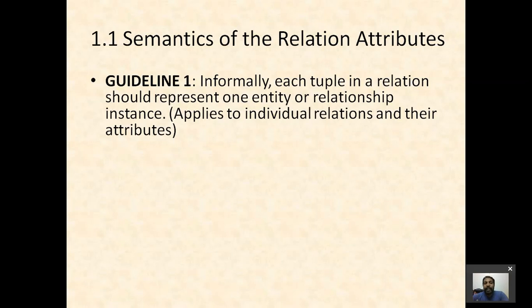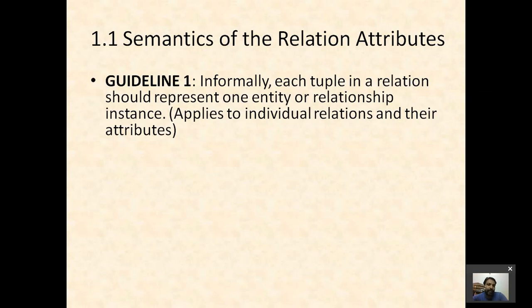We should not represent multiple things in a single row. For example, if you are representing some student's table — say, storing Akshay's data in a single row — then that row should contain only Akshay's data, not some other person's data. Each tuple in a relation should represent only one entity or relationship instance; it should not represent multiple instances or multiple things.